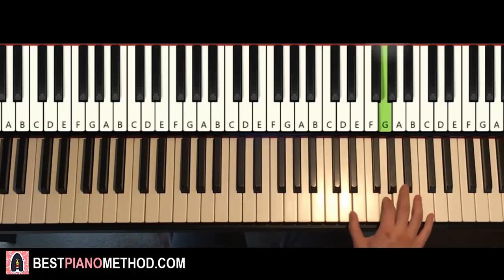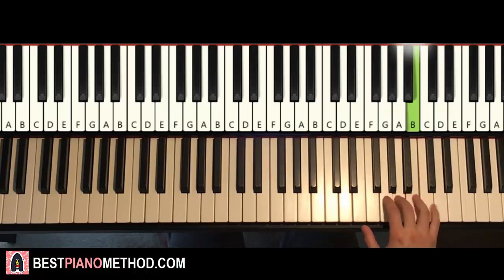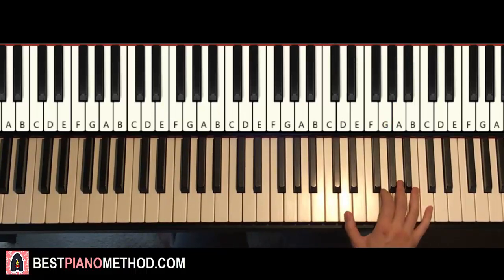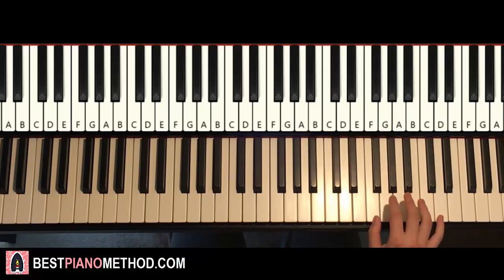So here we go, it goes G, G, D, G, G, up to the higher D, B, A, G, G, D, G. That's it for the right hand. Remember this motive. One more time, so it goes like this: G, G, D, G, G, higher D, B, A, G, G, D, G. Okay, so that's the right hand motive, you just have to play it twice.